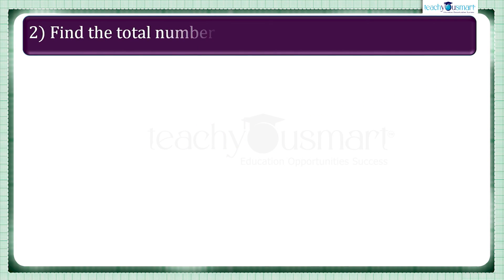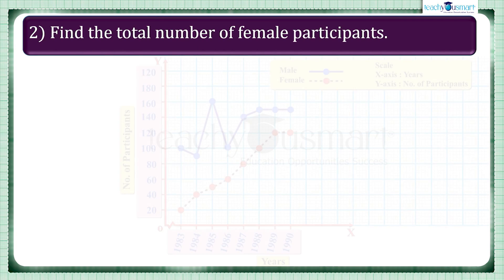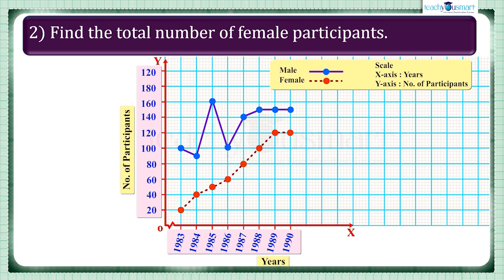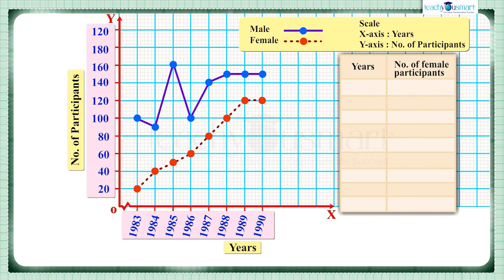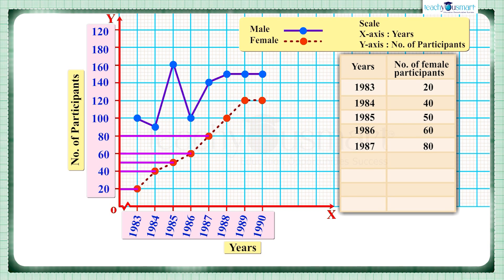Next, find the total number of female participants. From the dotted line, the number of female participants were 20, 20, 40, 50, 60, 80, 100, 120, and 120. Adding these values, we get the total number of female participants as 590.